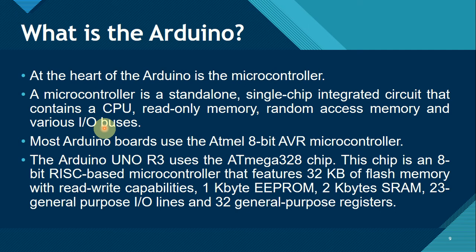The ATmega328 chip is an 8-bit RISC-based microcontroller that features 32 kilobytes of flash memory with read-write capabilities, 1 kilobyte of EEPROM (electrically erasable programmable read-only memory) — meaning you can store data in this memory and delete it only using electricity — 2 kilobytes of static RAM, 23 general-purpose I/O lines, and 32 general-purpose registers.